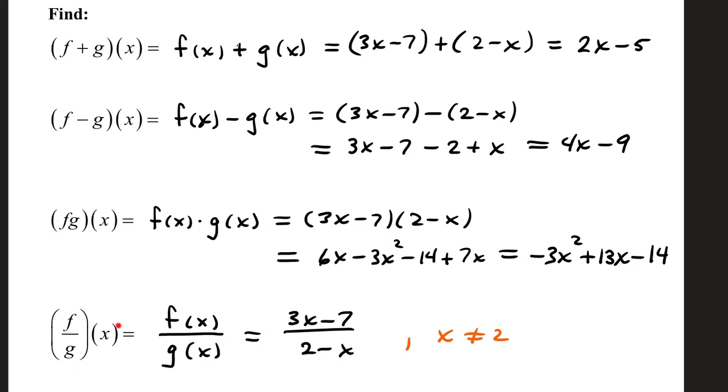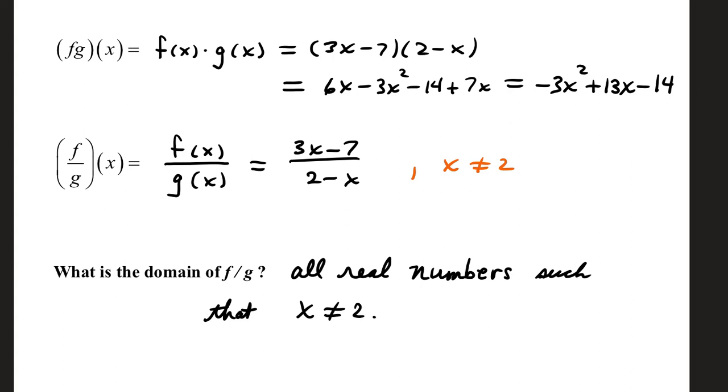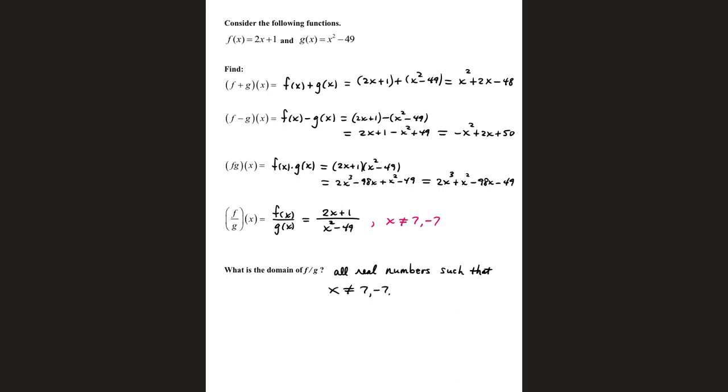f over g of x: f of x, that function is your numerator; g of x, that function is your denominator. I did make a note in a different colored pen that this is only defined when x isn't 2. In your homework, you'll also be asked to provide the domain of the division. Remember domain's all the good guys. So the domain of f over g is all real numbers such that x isn't 2.